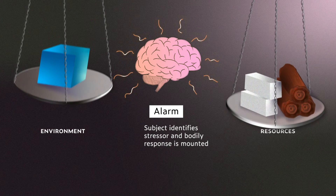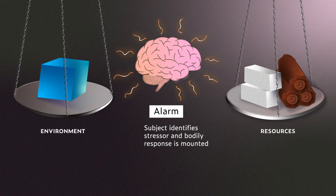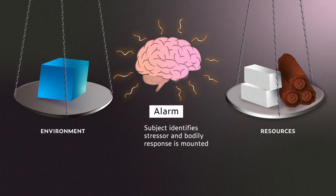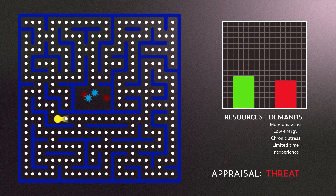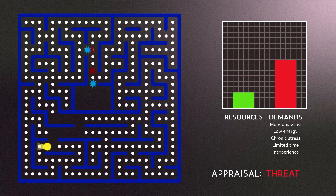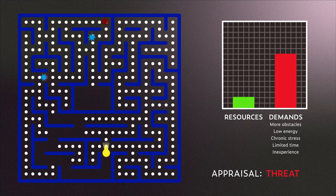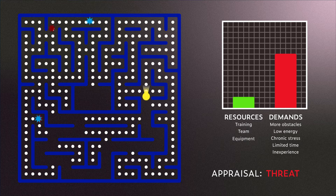Acute stress is experienced after an alarm phase, when your brain makes a cognitive appraisal of demands versus your personal and environmental resources, and decides whether or not to send you into a state of threat. This appraisal process is subjective, and there are ways you can decrease perceived demands and grow your resources to prevent stress and instead meet a challenge.